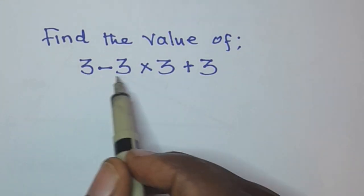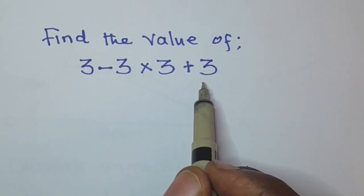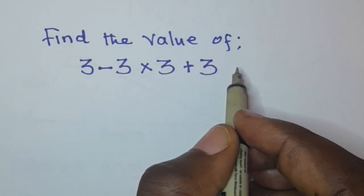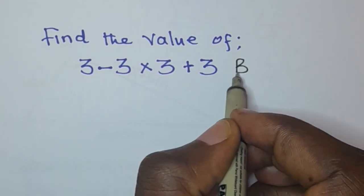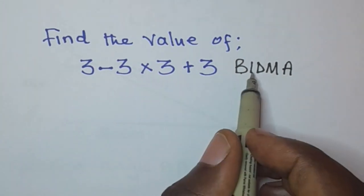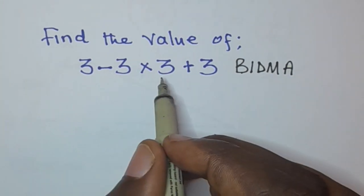Okay so for us to solve this expression here we need to apply the order of operations. In other words we're going to use BIDMAS. Brackets we don't have brackets. Indices we don't have indices or powers.